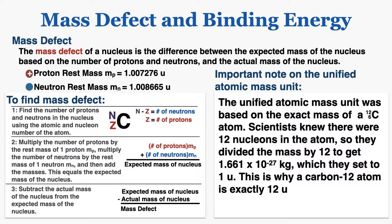Before we go on, the unified atomic mass unit was actually based on the exact mass of a carbon-12 atom. Scientists knew there were 12 nucleons in the atom, so they divided the mass of the atom by 12 to get 1.661 times 10 to the negative 27 kilograms, which they set equal to one unified atomic mass unit. This is why a carbon-12 atom is exactly 12u — because u was defined as exactly one-twelfth of a carbon-12 atom.